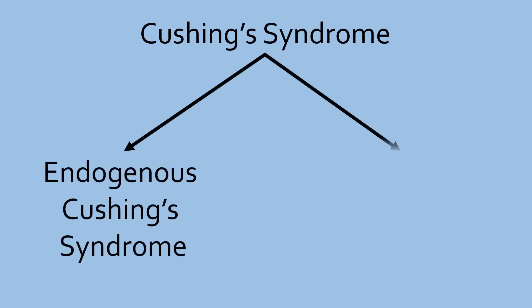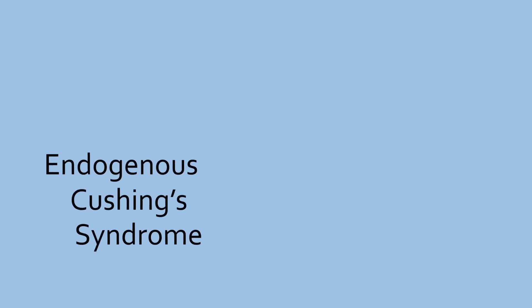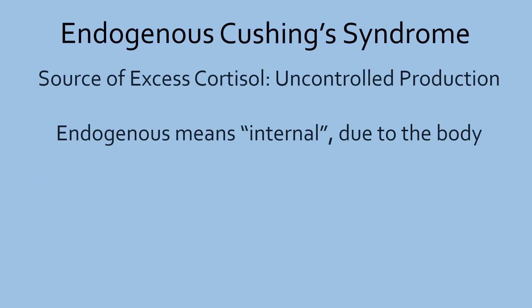There are two types of Cushing's syndrome depending on whether the excess cortisol is from inside or outside the body. Unlike Addison's disease, aldosterone is not involved. In endogenous Cushing's syndrome, the body itself is producing too much cortisol.